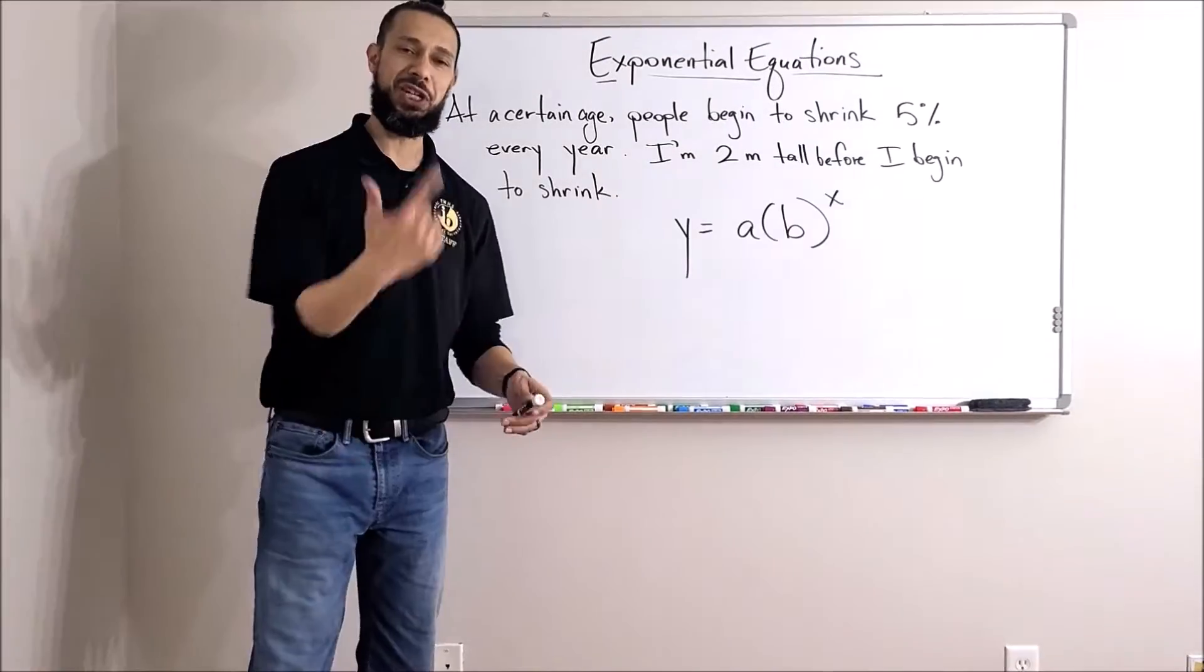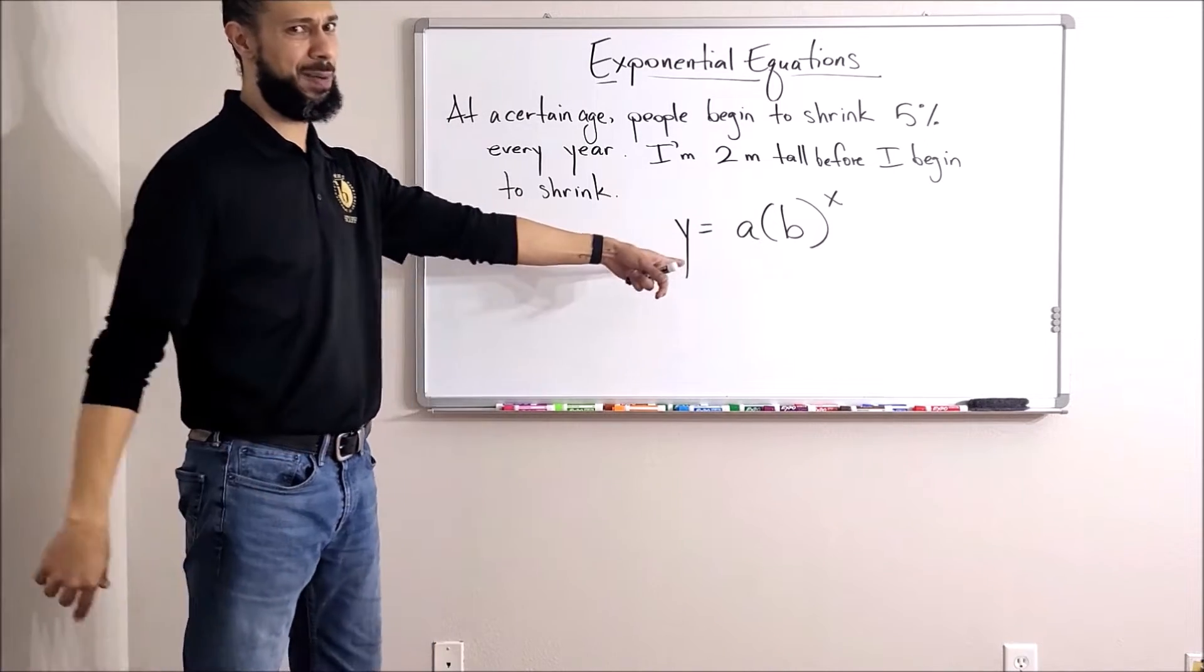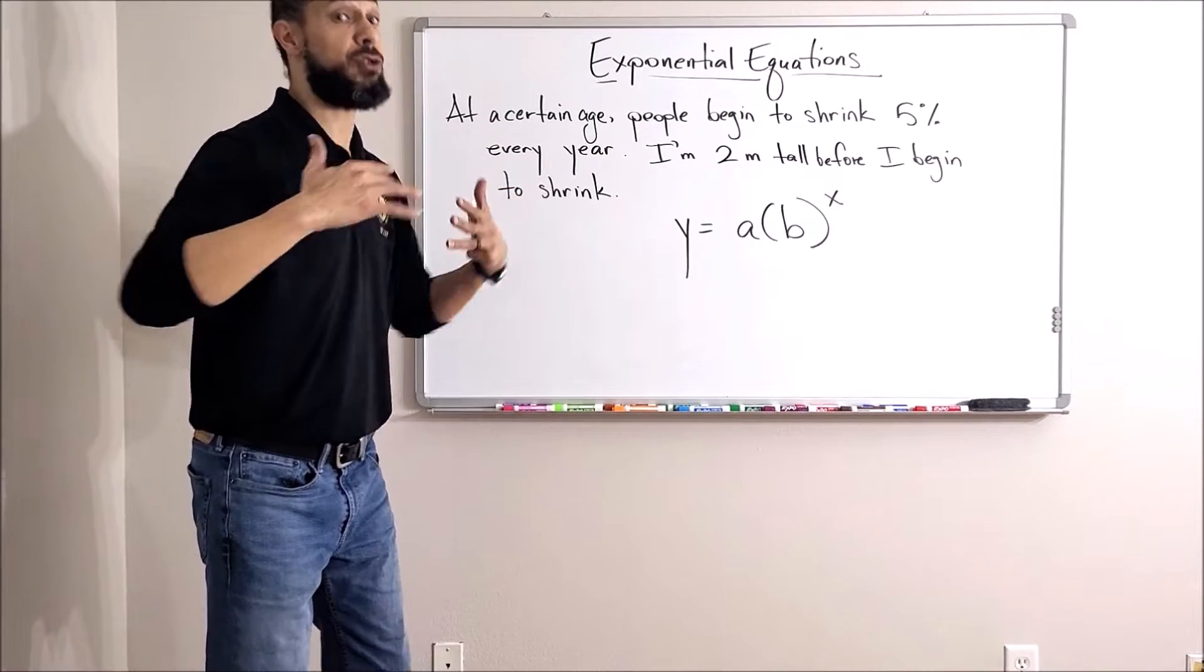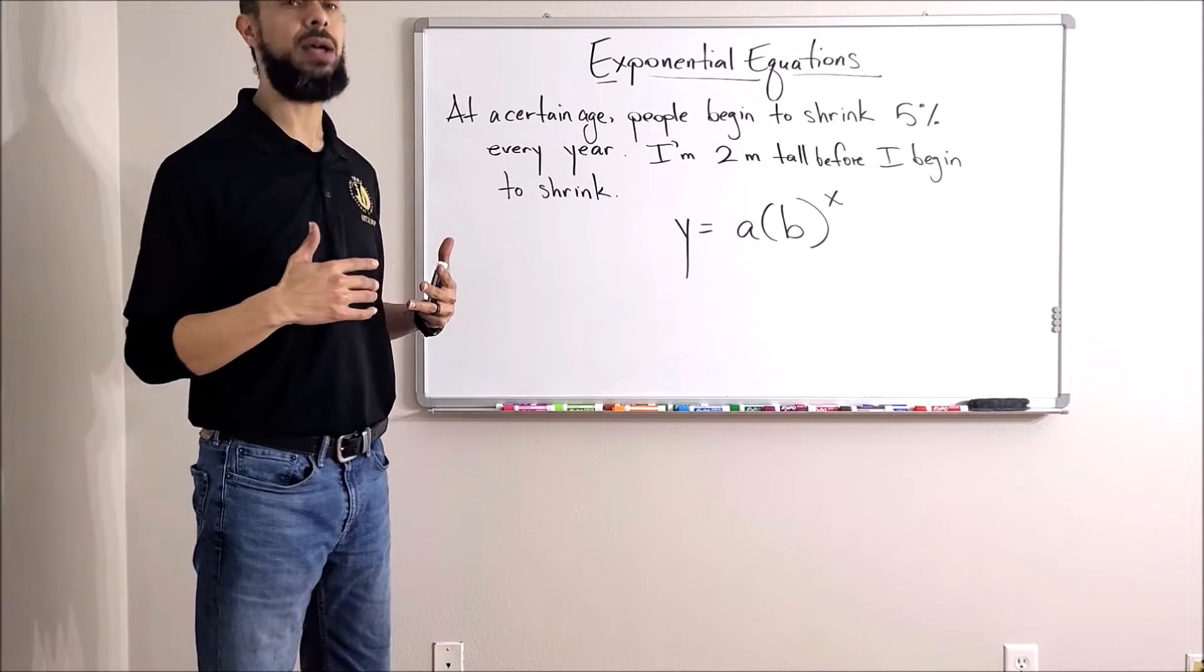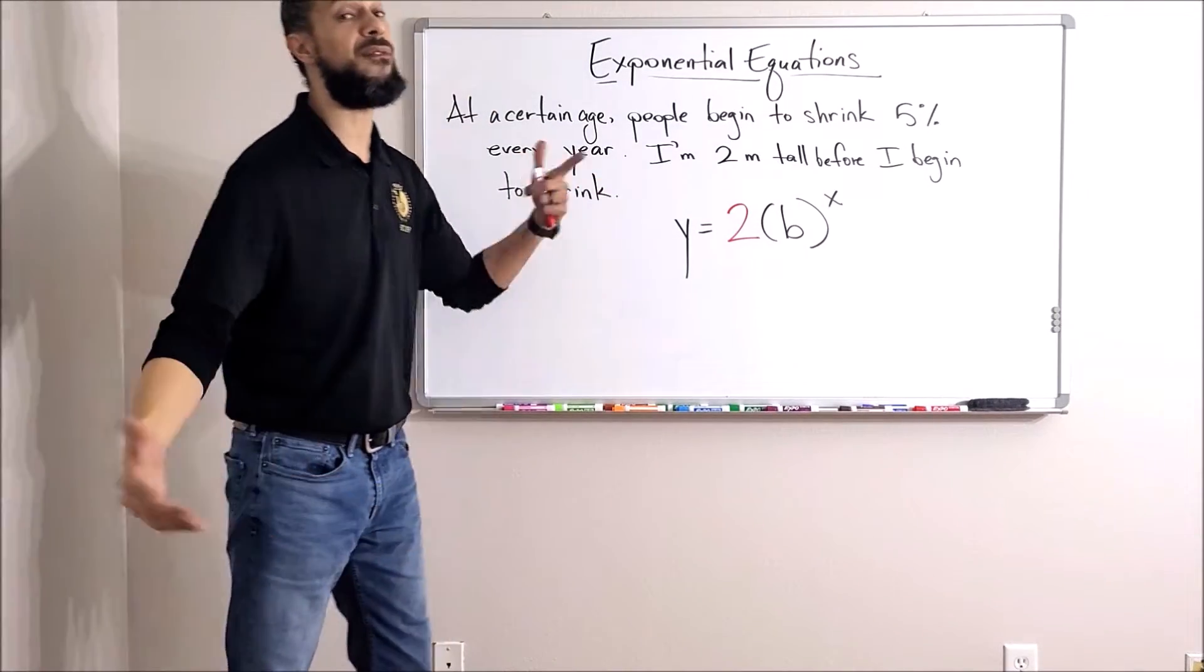Get that general equation up here. All right, first number is the easy part. You know that's the starting point. So how tall am I before I start to shrink? At the beginning of shrinking, how tall am I? I am two. Good, that's exactly right. I'm two meters tall before I start to shrink.